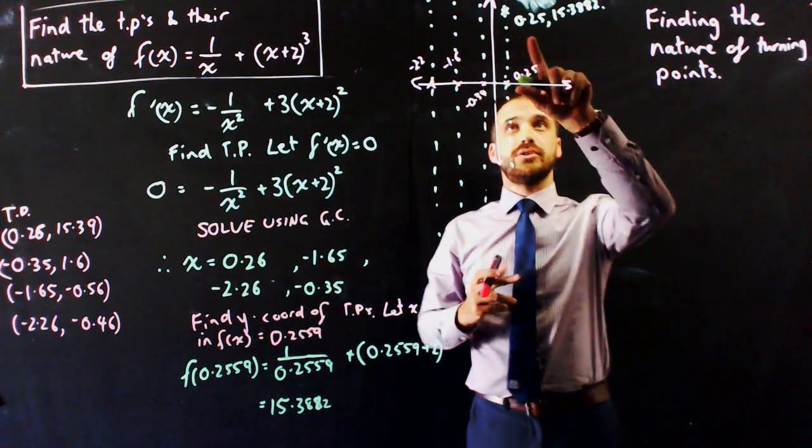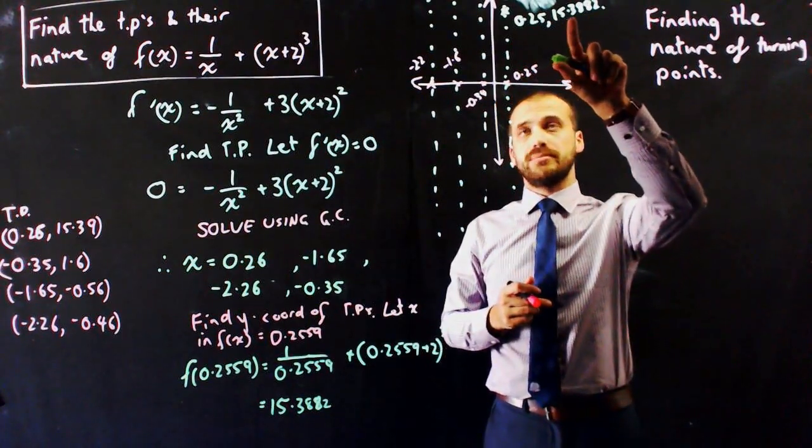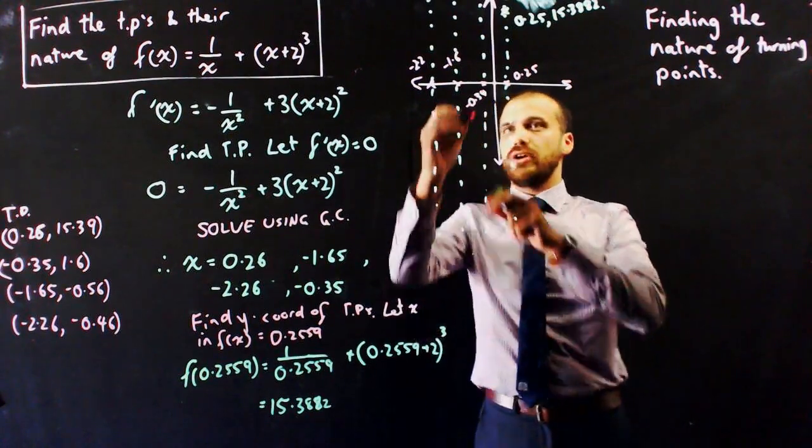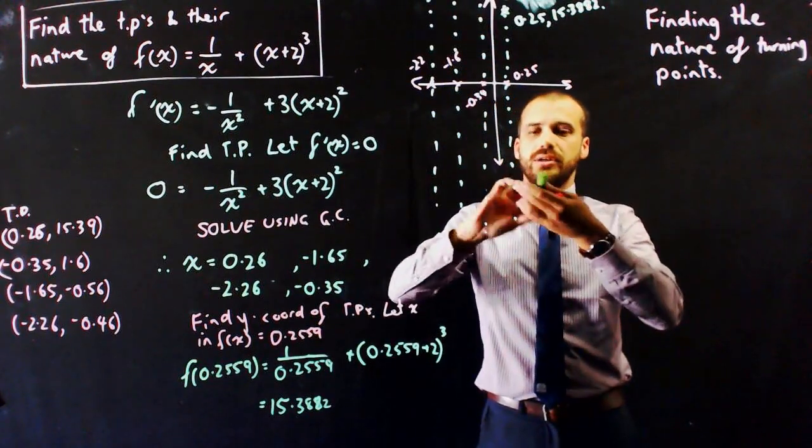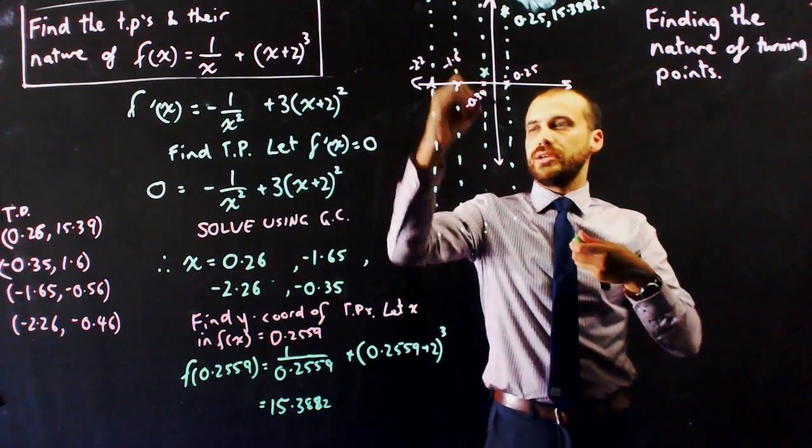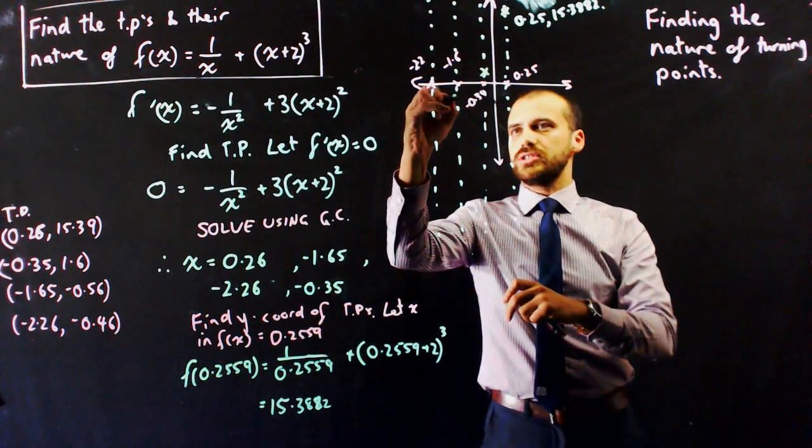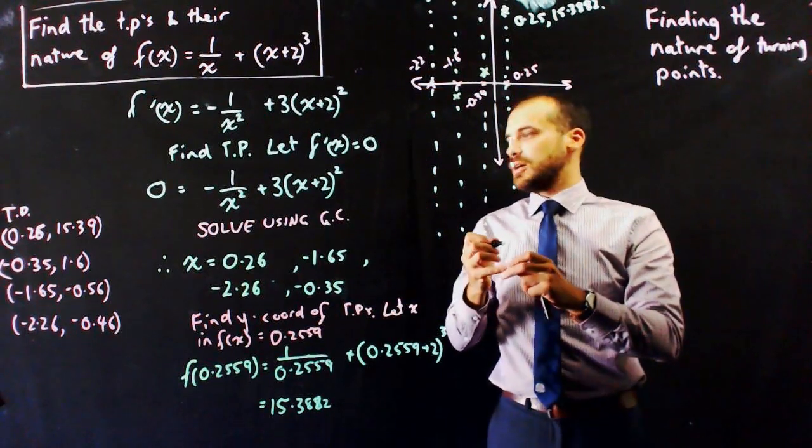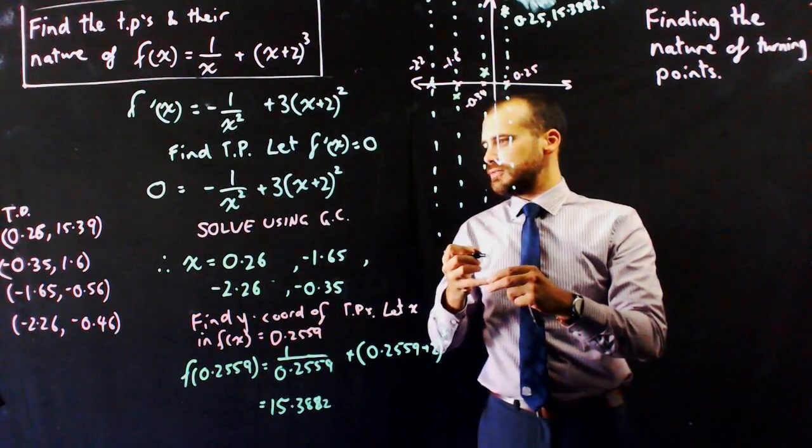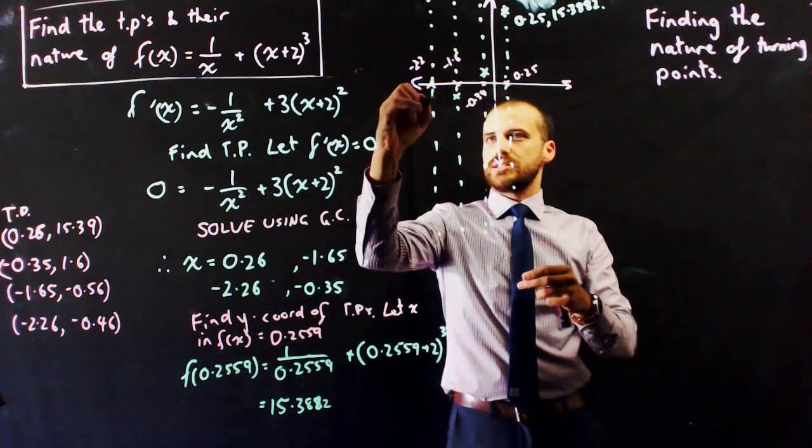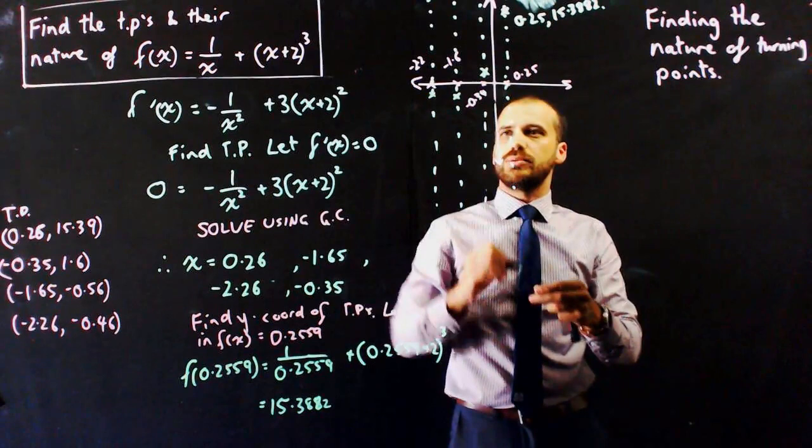So here's my four turning points. Now I can plot them on here. I've got (0.25, 15.39). I've got (-0.35, 1.6), so 1.6 would be like here-ish. I've got (-1.65, -0.56), so I'm below the x-axis there. And I've also got (-2.26, -0.46), so I'm below the x-axis there and a little bit above the previous one.